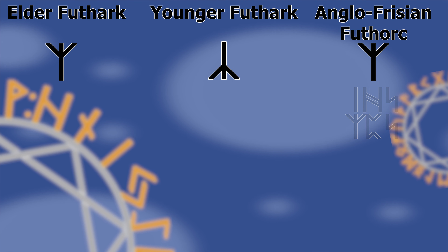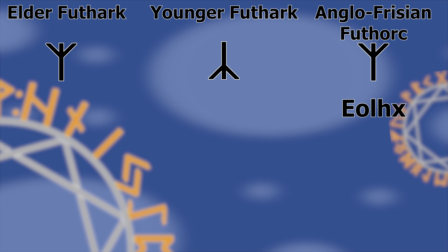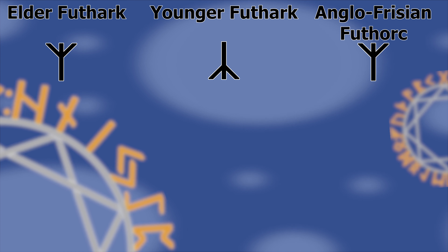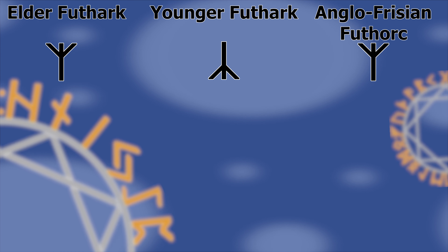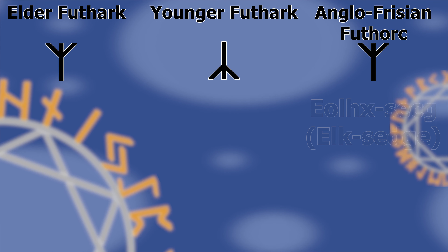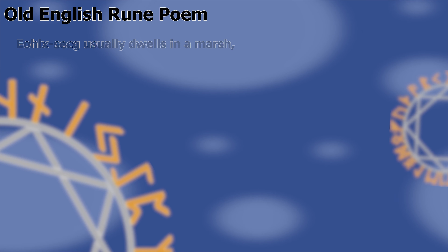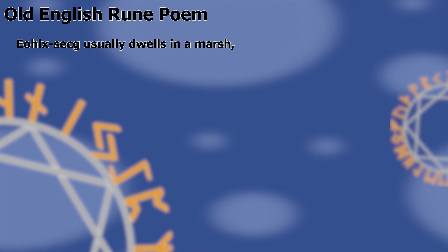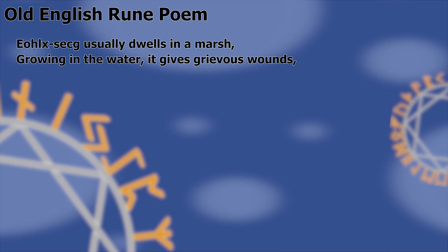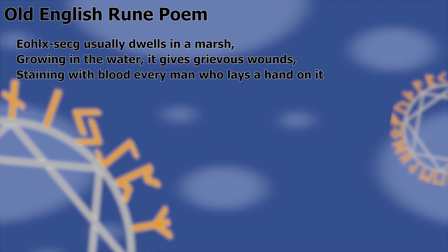The Old English rune poem partially names this rune elk, but this is only part of the compound word used to create the xx sound, which doesn't occur at the beginning of words. The rune's name is elk sedge, a type of sharp grass. Elk sedge usually dwells in a marsh, growing in the water. It gives grievous wounds, staining with blood every man who lays a hand on it.